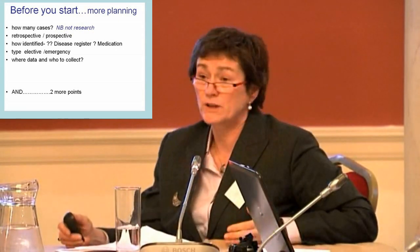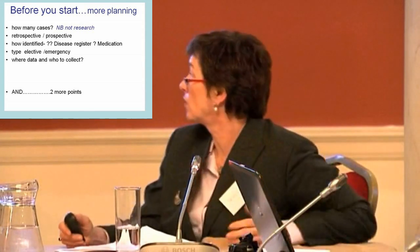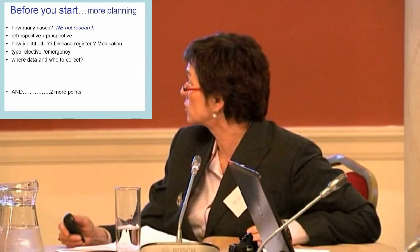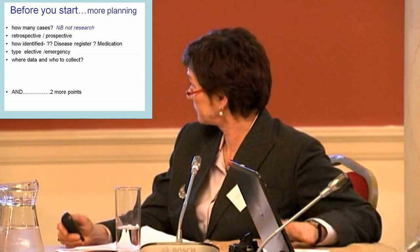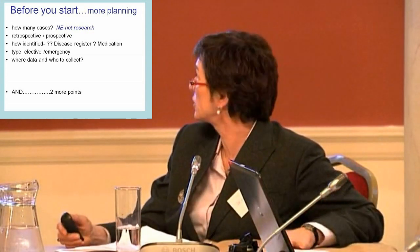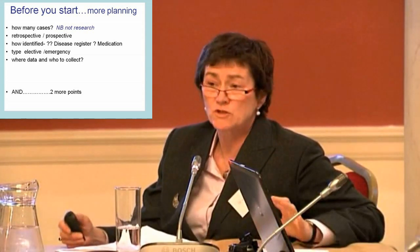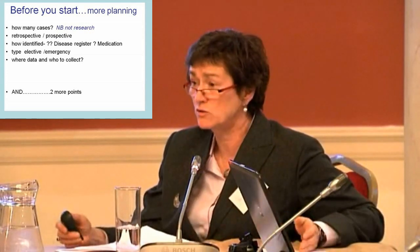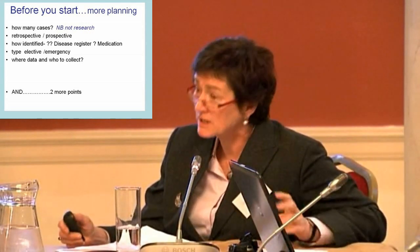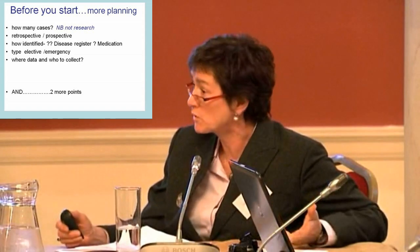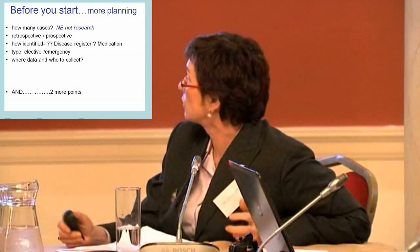You need to decide whether you are going to look retrospectively — pulling notes from the past — or collect data prospectively as you go along. There are pluses and minuses to each. You also need to consider how you are going to identify the patients. In a hospital setting, HIPE is the obvious source. In a computerised practice, you may have a disease register or use your medication listing if your disease register is not up to date. If you have neither, your local pharmacist can be quite useful — for example, for a diabetes audit, the pharmacist can provide details of patients for whom you have been prescribing.